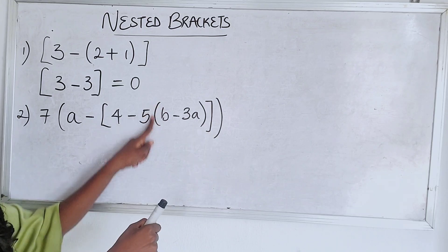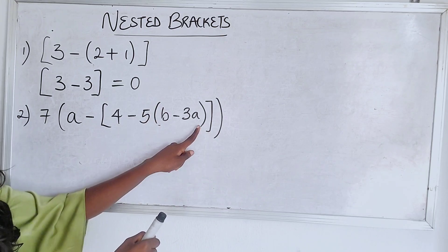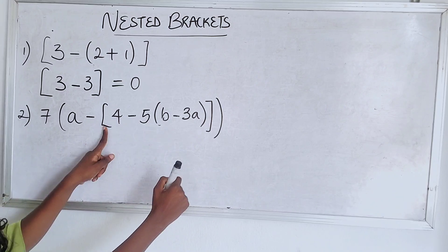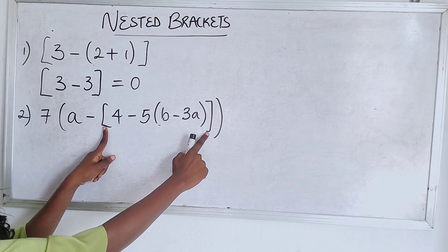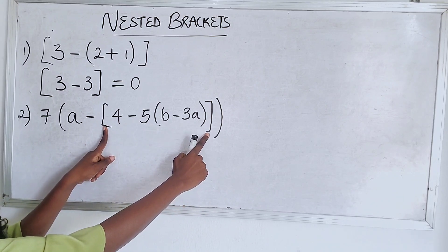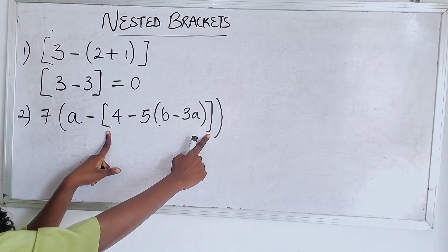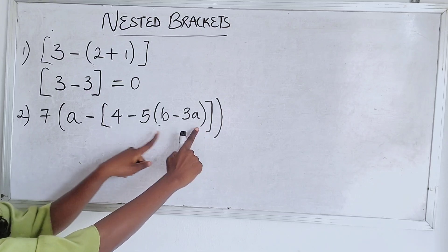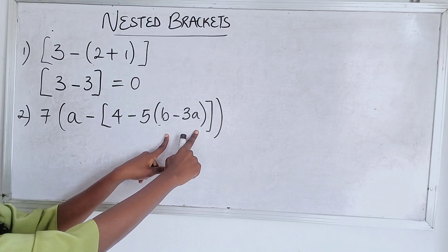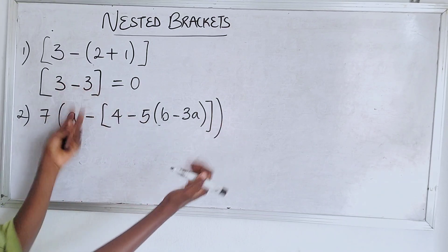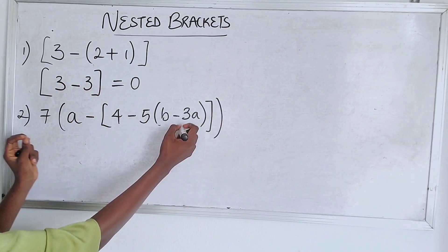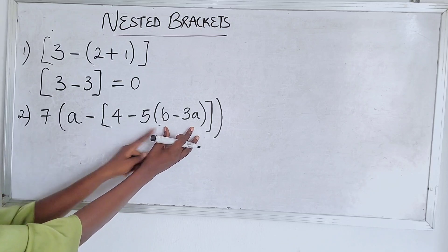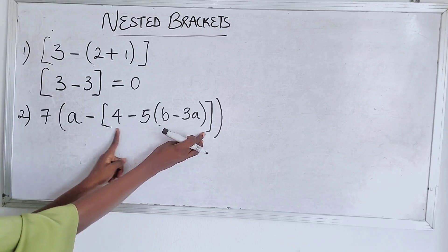We have one, two, three brackets. Once you open a bracket, you have to close it. You can see how the square bracket is used so we can differentiate it from the parenthesis. You have to solve the innermost bracket first and then keep going outward until you get to the final one.